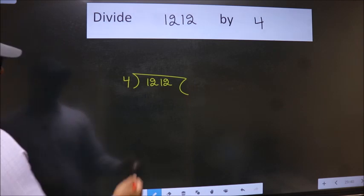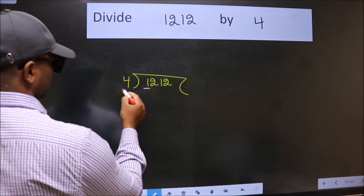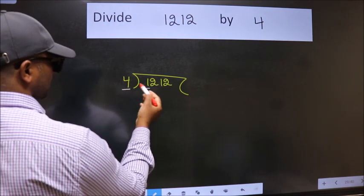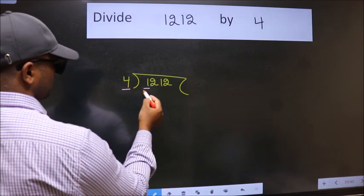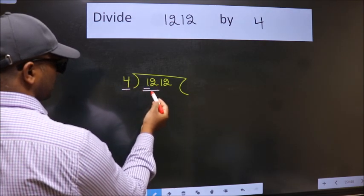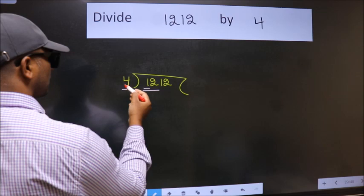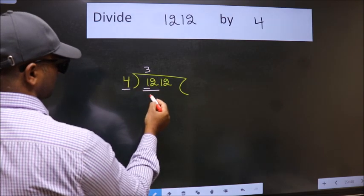Next, here we have 1. Here 4. 1 is smaller than 4, so we should take 2 numbers, 12. When do we get 12 in 4 table? 4 times 3 is 12.